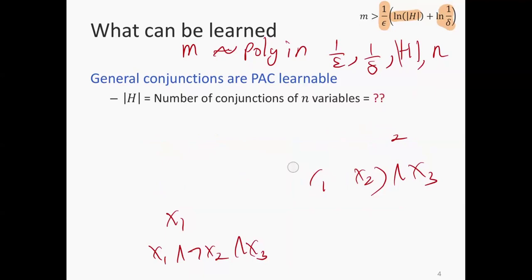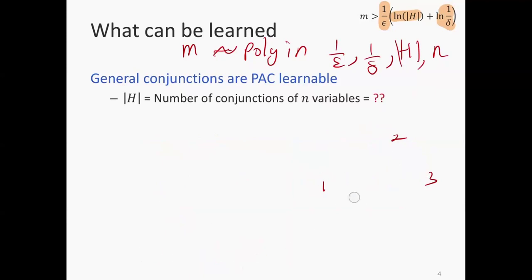For every single variable — we have n variables — there are three options for each one.